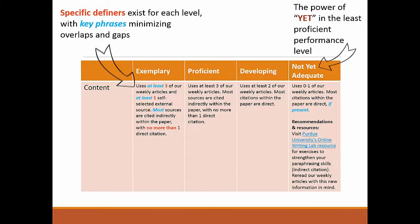For example, if we look at this content criterion: if Student A uses at least three weekly articles and at least one self-selected external source, but all citations are direct, what would that student score? If you answer "developing," you are correct. What if you were a student who worked diligently but just didn't understand, and you scored an F?